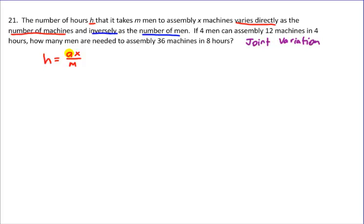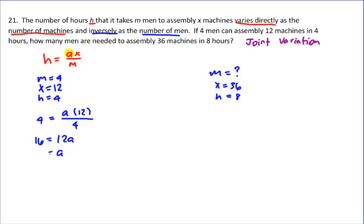So go ahead and substitute stuff in. If four men can assemble 12 machines in four hours, so this is the first part of the problem because you've got to walk through these things twice. Then the question is, how many men will it take to assemble 36 machines in eight hours? So let's get a model setup. Put four in for H. A is going to stay A. Twelve for X. And four for M. So here's your original first setup. So 16 equals 12A. A equals 16 over 12. Four thirds.